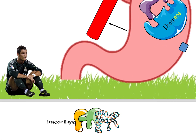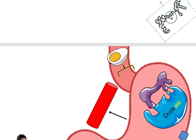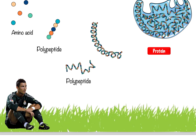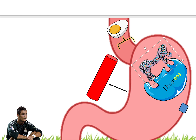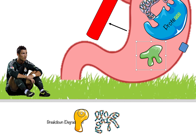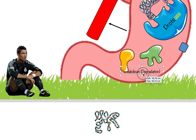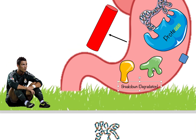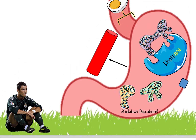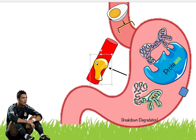The protease breaks the protein down into smaller pieces — breakdown, or degradation. These smaller pieces are small enough to be absorbed into the bloodstream, because the original protein was too big. Now these smaller pieces can be taken up into the bloodstream. So that's one example of what an enzyme can do — the breaking down process.